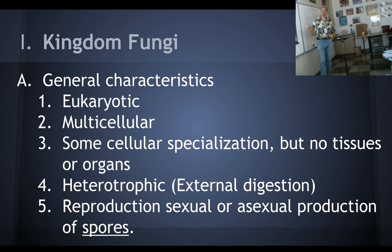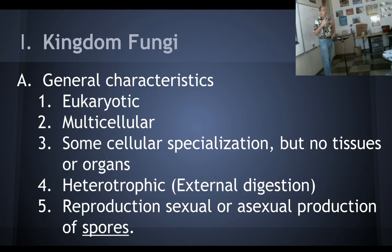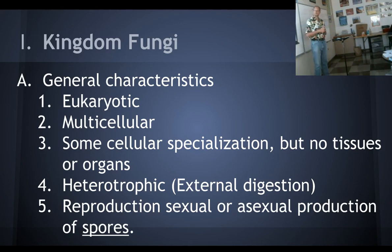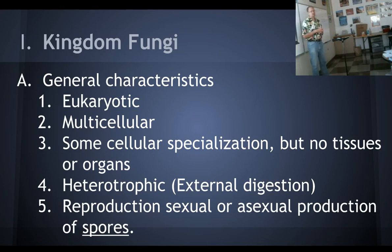Fungi are multicellular, so there's a difference here between protists and funguses. When protists got together with lots of cells, we called it a colony, because those individual cells did not differentiate — they were all exactly the same kind of cell. In a fungus, we see true differentiation; some cells take on a different job.